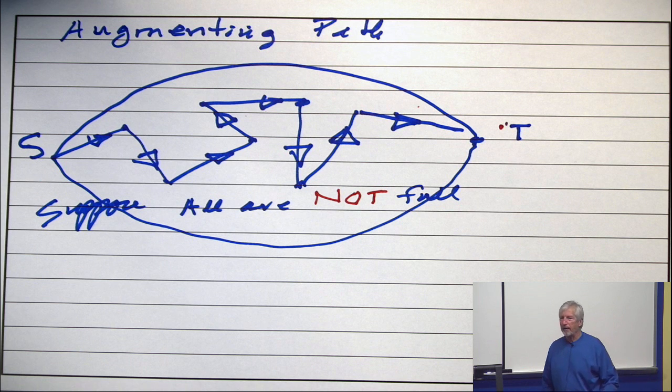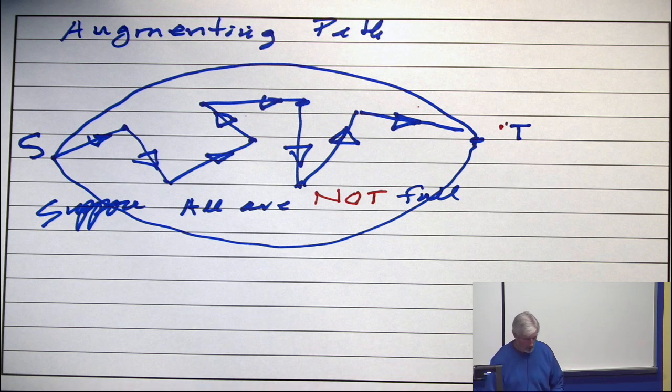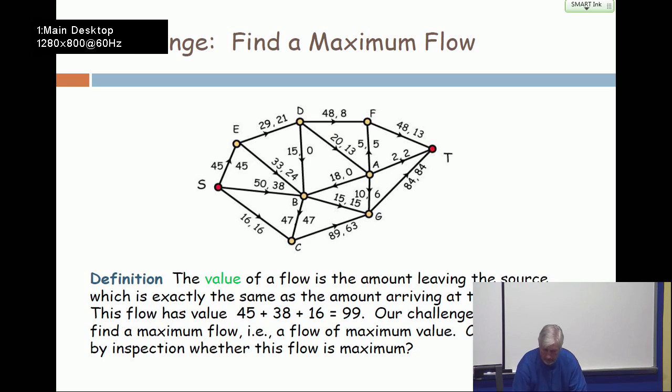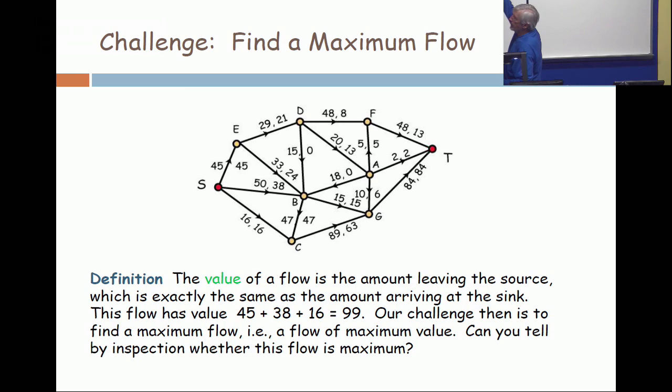So if you can find an augmenting path like that, then you can increase the value of the flow. All right, by inspection, look at that and see if you see an augmenting path. Can you get from the source to the sink following a path where every edge is not full? So I can't leave going to E because that's full. I can go to B. I can't go to C. The only way to leave on an edge which is not full is to go to B. Now, how can you leave B on an edge which is not full? All the edges leaving B are full. So you can't get from the source to the sink with an augmenting path.